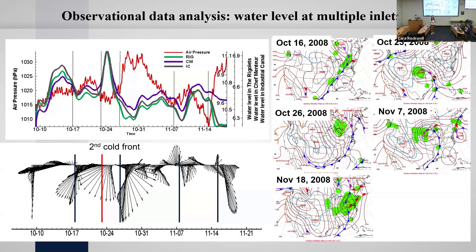Looking at the wind vector during that time period and the oscillation of water level, we find that — except for the second cold front — after the other four cold front passages, the water level drops. However, after the second cold front passage, the water level increases by half a meter. There are common features for cold front passages: before the passage, air pressure drops; after, it increases. At the same time, wind changes direction, mainly from southerly to northerly in a clockwise manner.